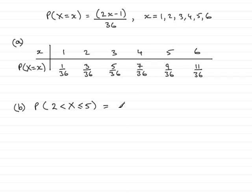So we need to write those probabilities in. That will be 5 over 36, plus the probability for 4, which is 7 over 36, plus the probability for 5. We're allowed to equal 5, remember. So that will be 9 over 36.